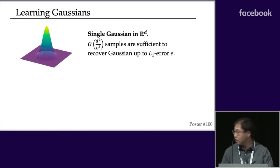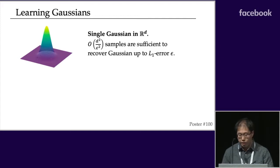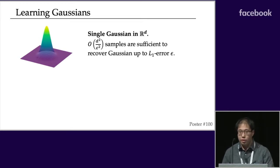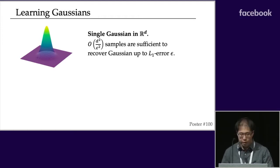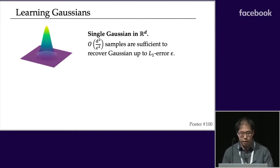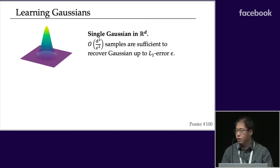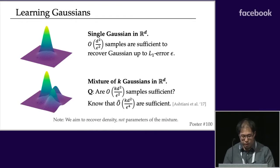Let's start with the simplest case: a single Gaussian in D dimensions. There's a very simple algorithm — if you want to get error epsilon in L1 distance, you draw D² / ε² samples, compute the sample mean, and compute the sample covariance matrix. With high probability this gives a very good approximation. This bound is intuitive: a Gaussian in D dimensions has D² parameters, and the 1/ε² factor handles sampling error.